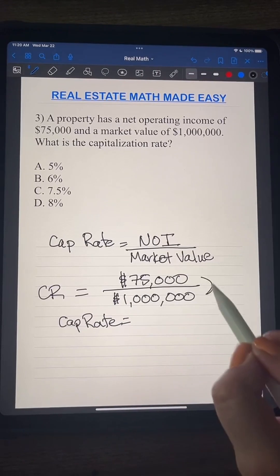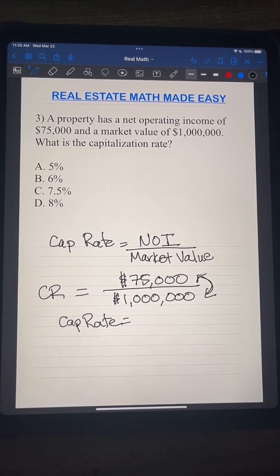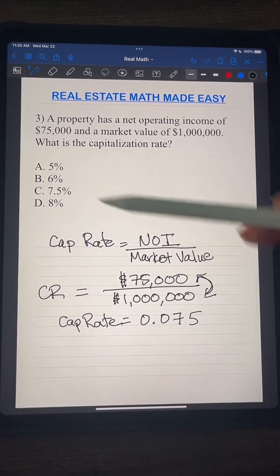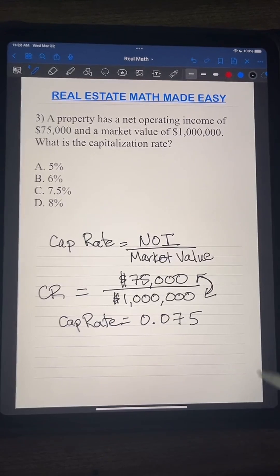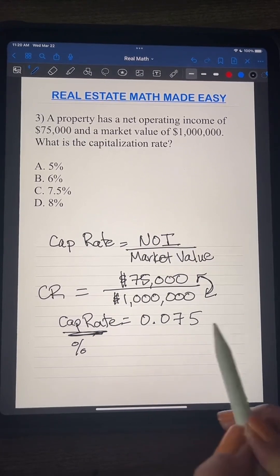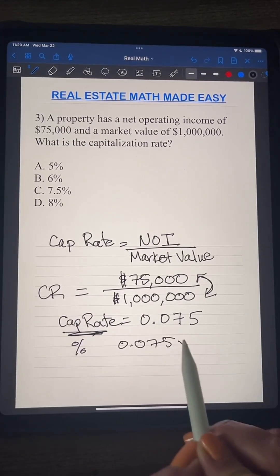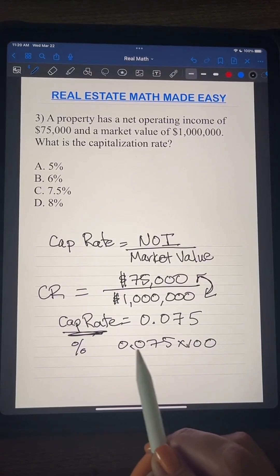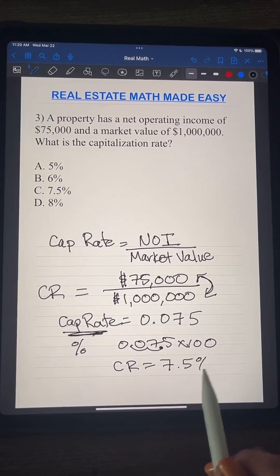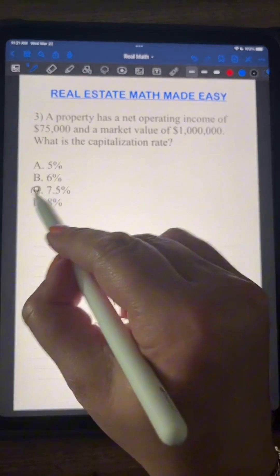We divide $75,000 by $1,000,000. That gives us 0.075 as a decimal. Since cap rate is expressed as a percent, we multiply by 100 — just move the decimal two places — so our cap rate equals 7.5%. The answer is C.